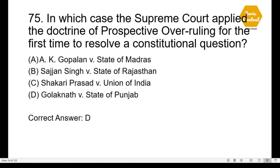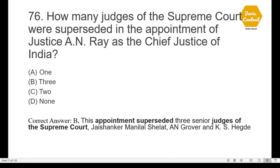Question 75: In which case did the Supreme Court apply the doctrine of prospective overruling for the first time to resolve a constitutional question? — option D: Golak Nath versus State of Punjab. Question 76: How many judges of the Supreme Court were superseded in the appointment of Justice A.N. Ray as Chief Justice of India? — option B: three. This appointment superseded three senior judges — Justice Jayashankar Manilal Shelat, A.N. Grover, and K.S. Hegde.